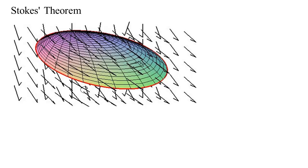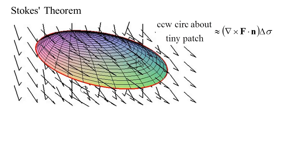For a tiny patch on the surface, the circulation around that tiny patch is going to be del cross F dotted with the normal to the surface, times the area of the little patch. Compare this to Green's theorem, where it was del cross F dot k times the area of the little patch. Of course, if your surface is stuck in the xy-plane, the normal is k — pointing straight up — so Green's theorem is just the special case.